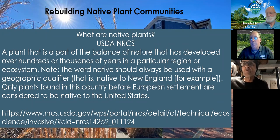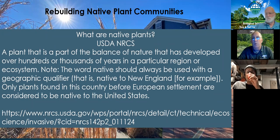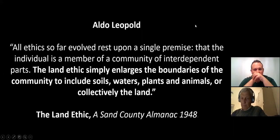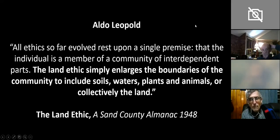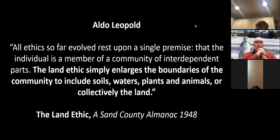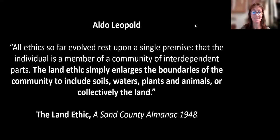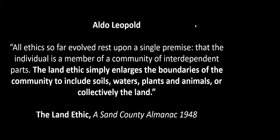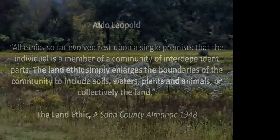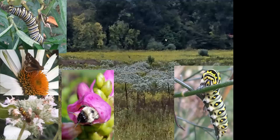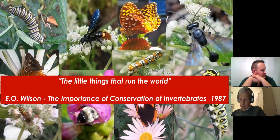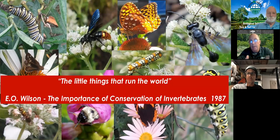What's a native plant? From the USDA NRCS — the Natural Resources Conservation Service — their description is pretty good. Key to their description is that you need a geographic qualifier. When you're talking about native species, you have ecotypes and eco-regions that are all important. Aldo Leopold — a huge fan of his — along with John Muir and E.O. Wilson, who unfortunately just passed away. We need a new land ethic. Leopold's land ethic simply enlarges the boundaries of the community to include soil, water, plants, and animals — looking at the whole landscape as a whole system.